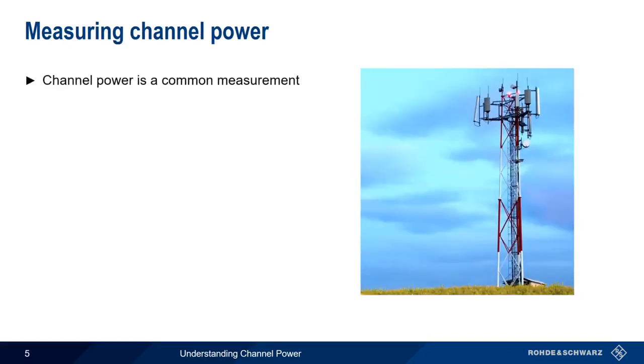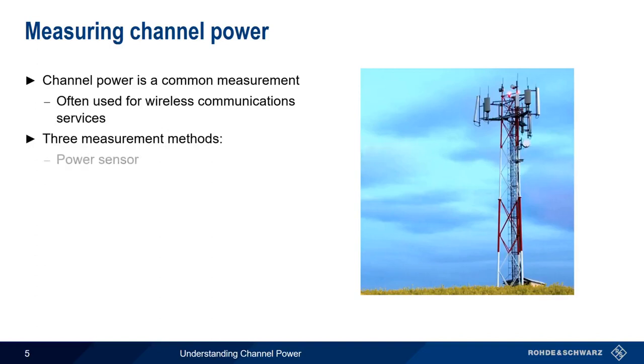Channel power is a very common measurement, especially for signals that are used in wireless communications services. There are three main ways in which we can measure channel power. The first is using an RF power sensor. We can also use a spectrum analyzer to measure channel power, either using the zero span method or the integrated bandwidth method.